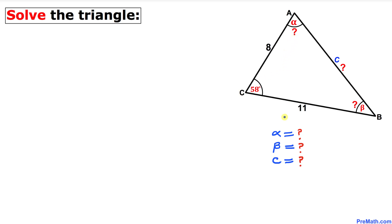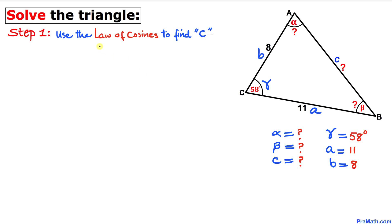We are going to find the value of alpha, beta, and side c. I'm going to call the angle at vertex C as angle gamma. The side opposite to vertex A I'll call side a, and the other side I'll call b. Our first step is to use the law of cosines to find side c. The formula is: c² = a² + b² − 2ab·cos(γ).